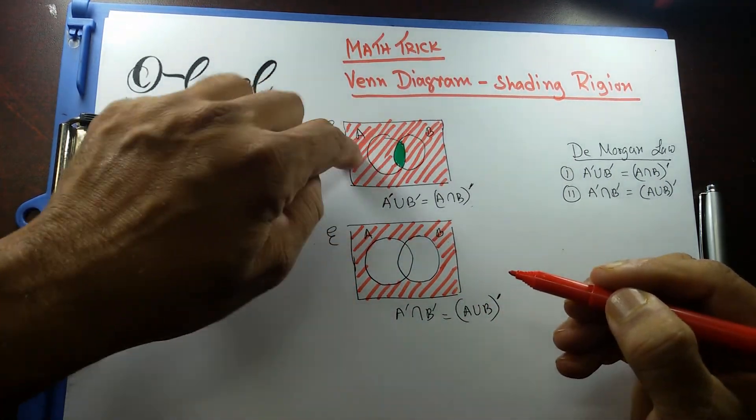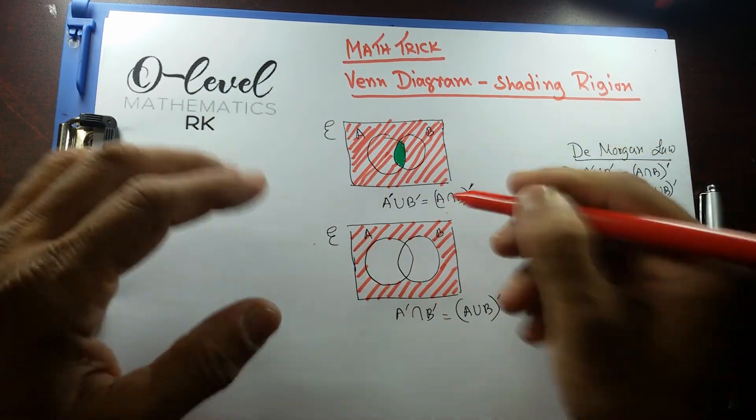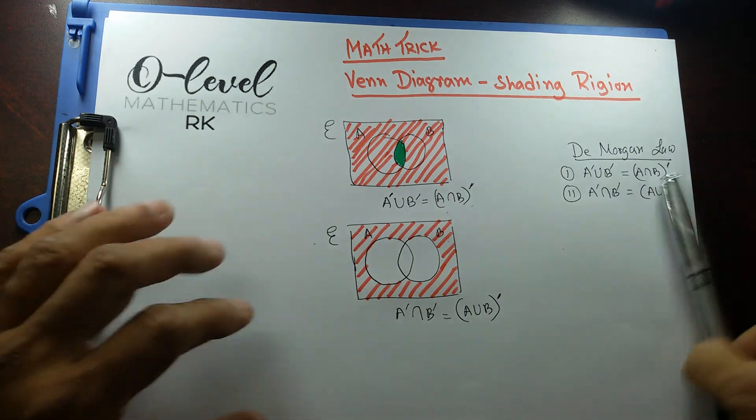In the question, don't shade both of them. Just this red stripe region. Or you can draw a little bigger. See, this is the one.